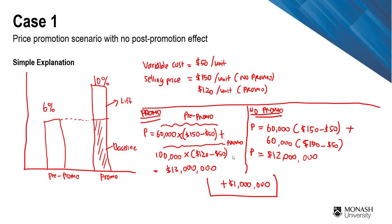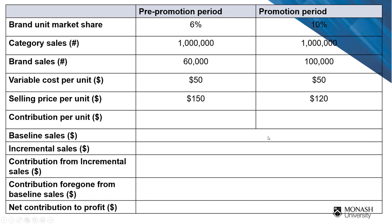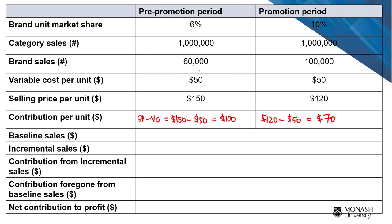That was the simple arithmetic approach. Now let's do it properly. First, break this down into contribution per unit: selling price minus variable cost. Without promotion: $150 minus $50 equals $100 contribution per unit. With promotion: $120 minus $50 equals $70 contribution per unit. The baseline sales, representing the pre-promotion period before any promotion, are 60,000 units.